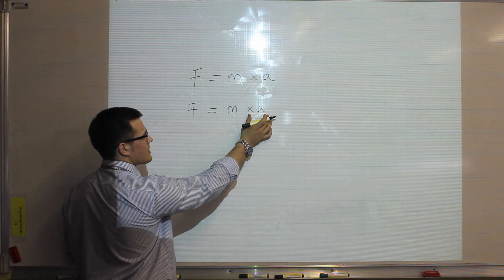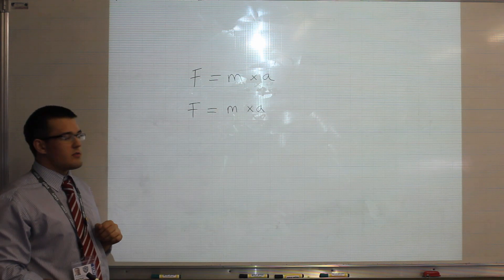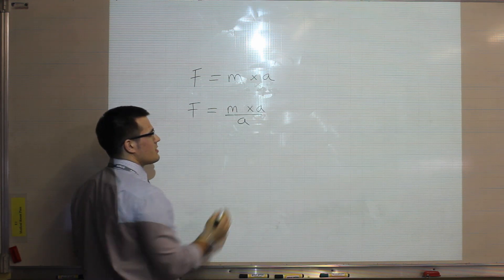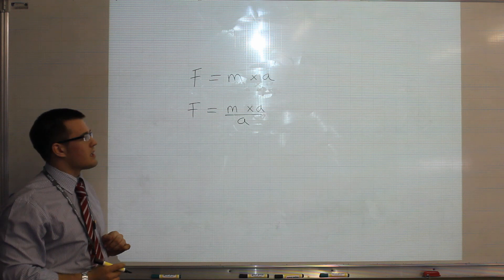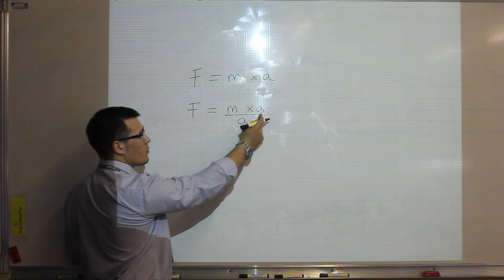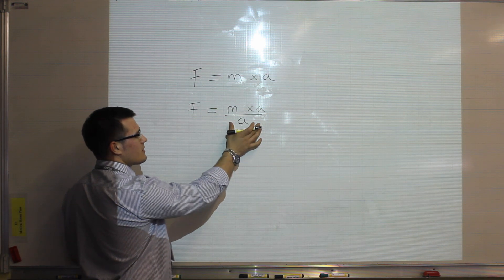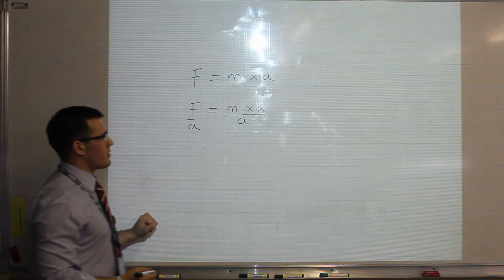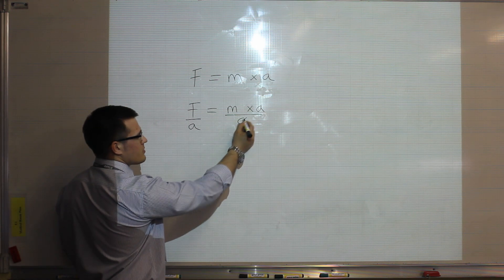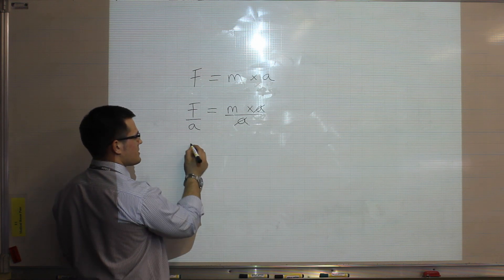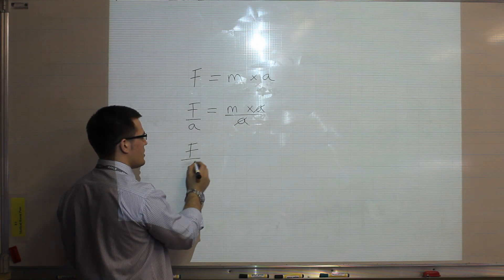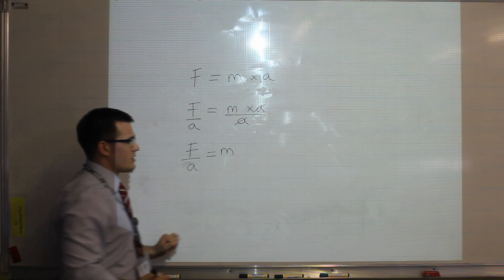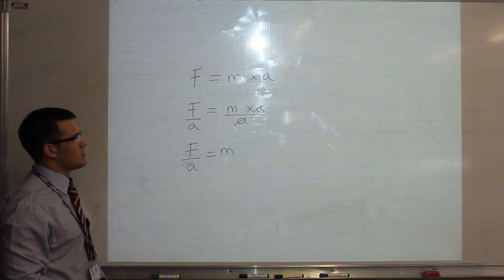I need to get rid of acceleration. The way I do that is I divide that side of the equation by acceleration, so that it cancels out. But the important thing to remember is I have to divide this side also by acceleration. So now my two accelerations cancel out, and mass is equal to force divided by the acceleration.